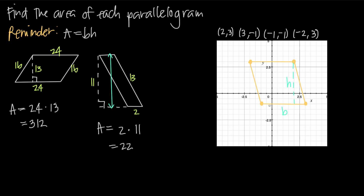To find the base, we count the number of units: 1, 2, 3, 4 — the base is 4 units. The area is base times height, so we count the height: 1, 2, 3, 4 — the height is also 4. So the area is 16 square units. Those are just a couple examples of how to find the area of a parallelogram.